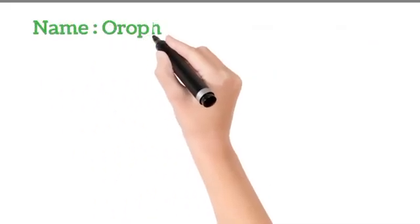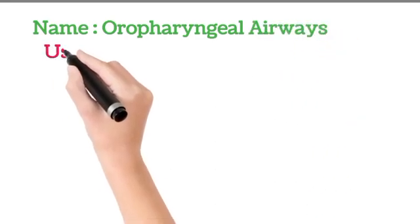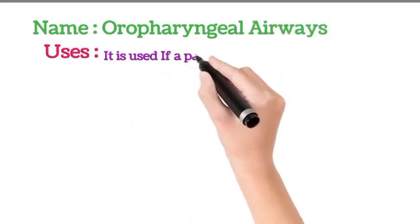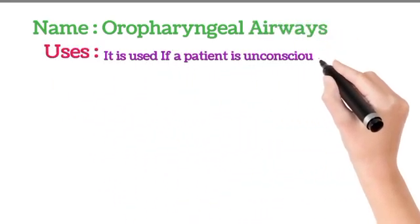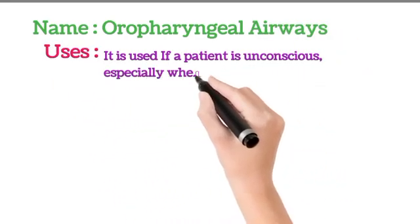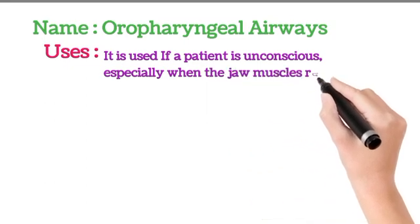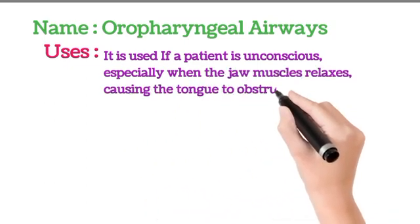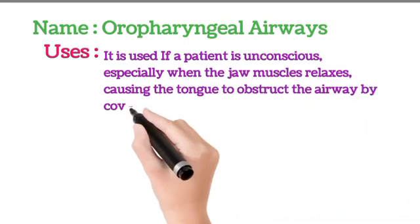Name: Oropharyngeal airway, also called Guedel airway. Uses: It is used if a patient is unconscious, especially when the jaw muscles relax, causing the tongue to obstruct the airway by covering the epiglottis.